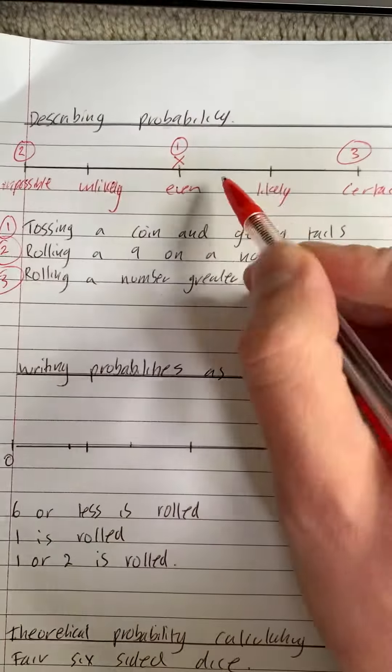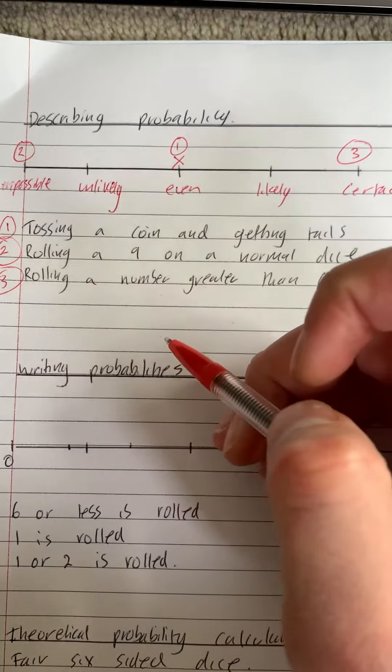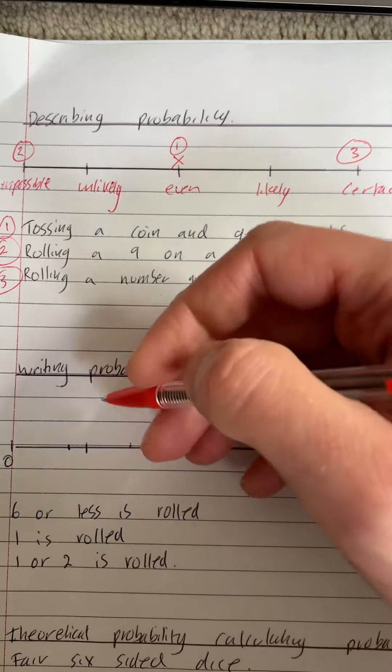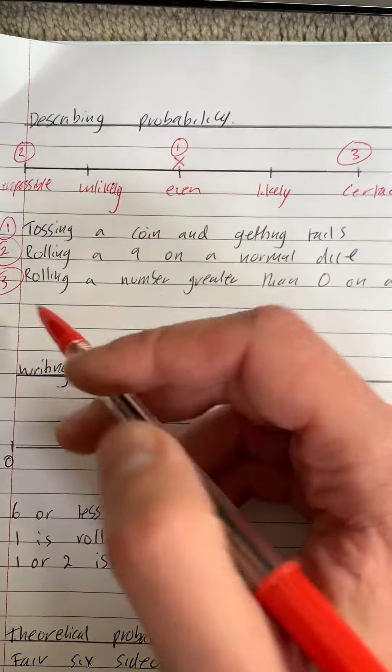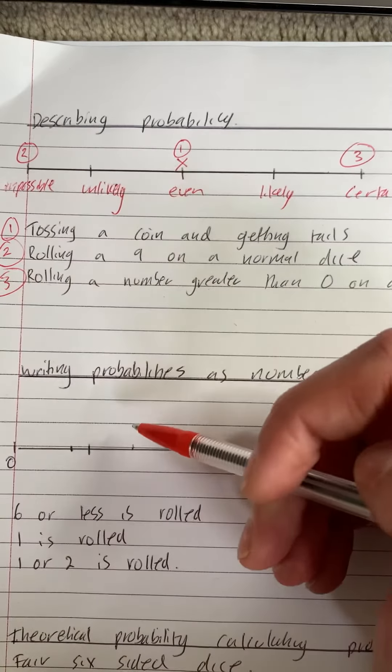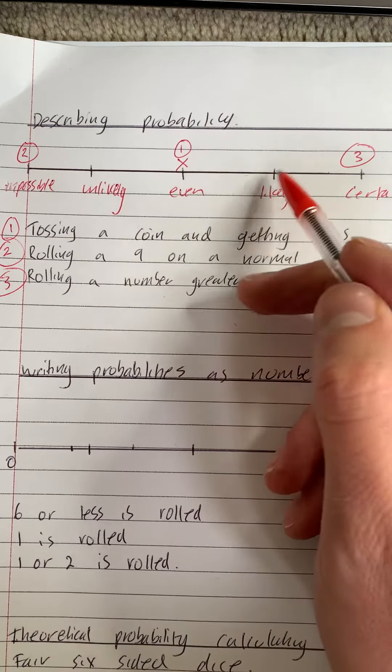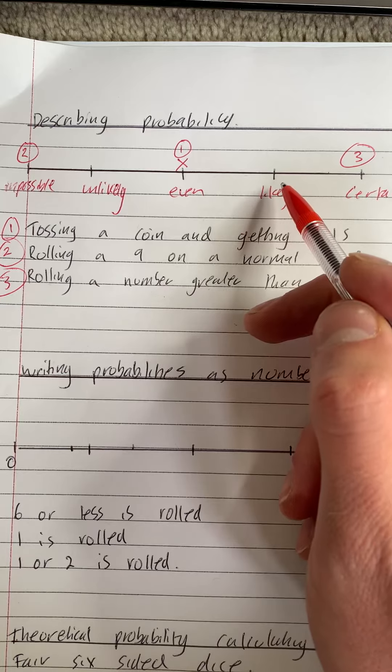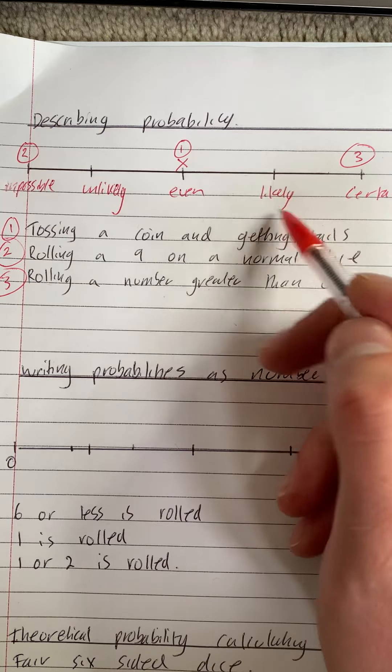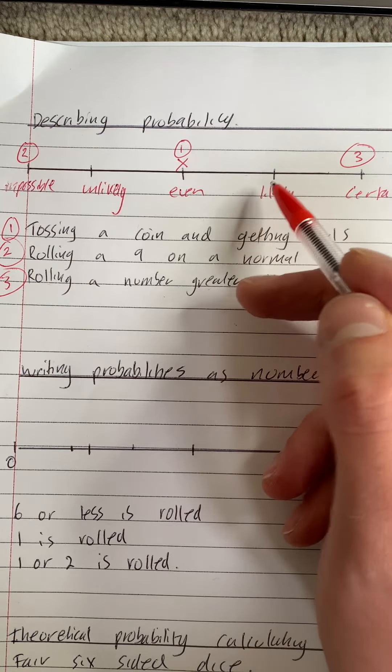We've then got things that are likely and unlikely in between. So you could say something like getting a one on a dice, it's pretty unlikely. And you could say getting a number greater than one, it's pretty likely. That's two, three, four, five, and six.